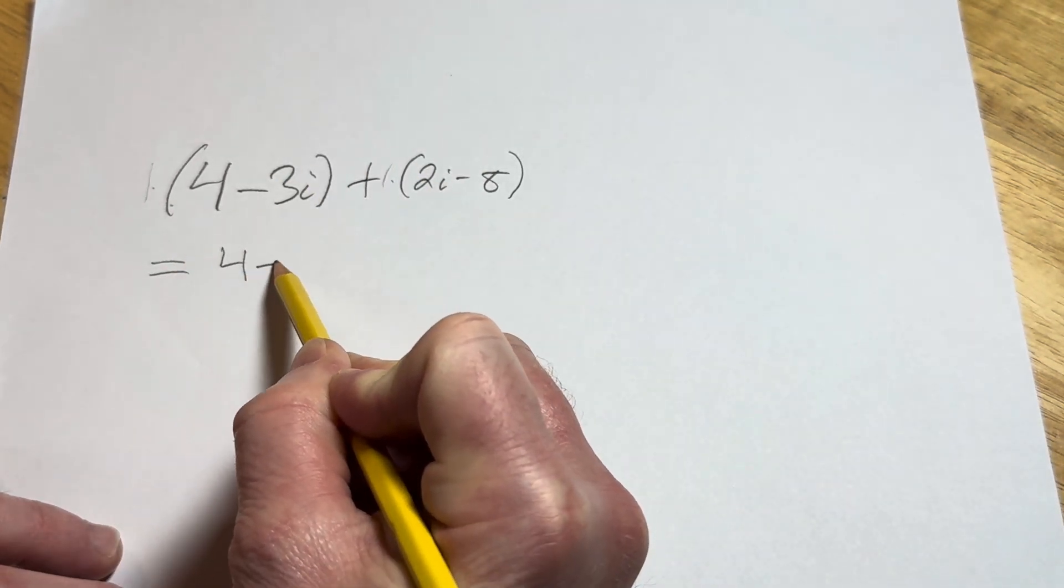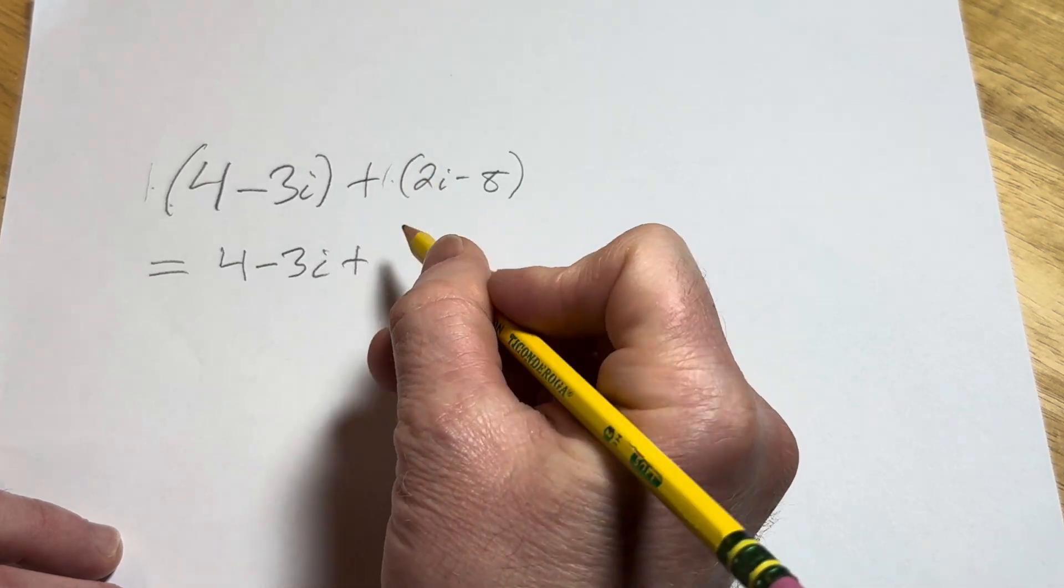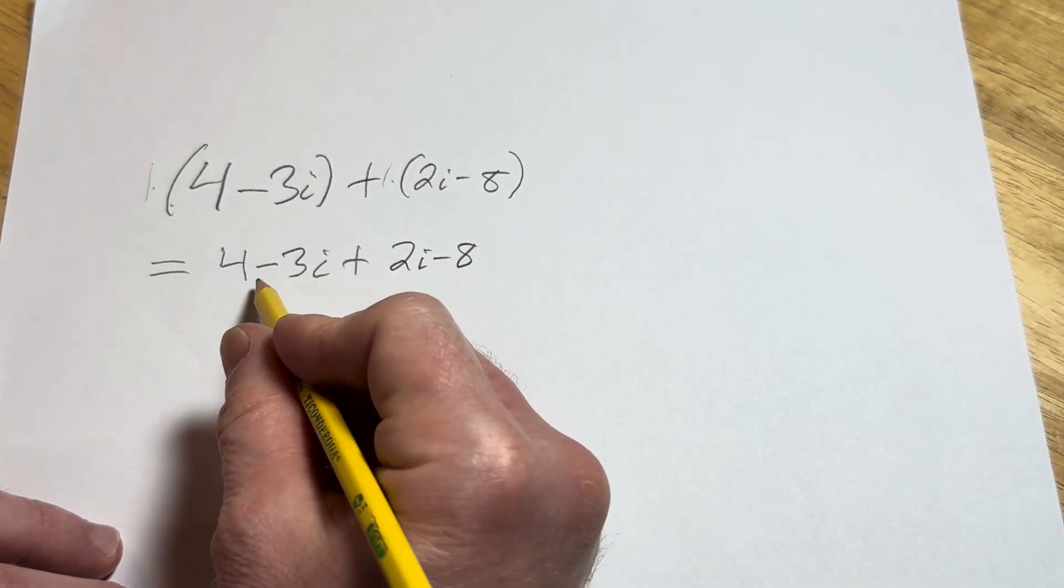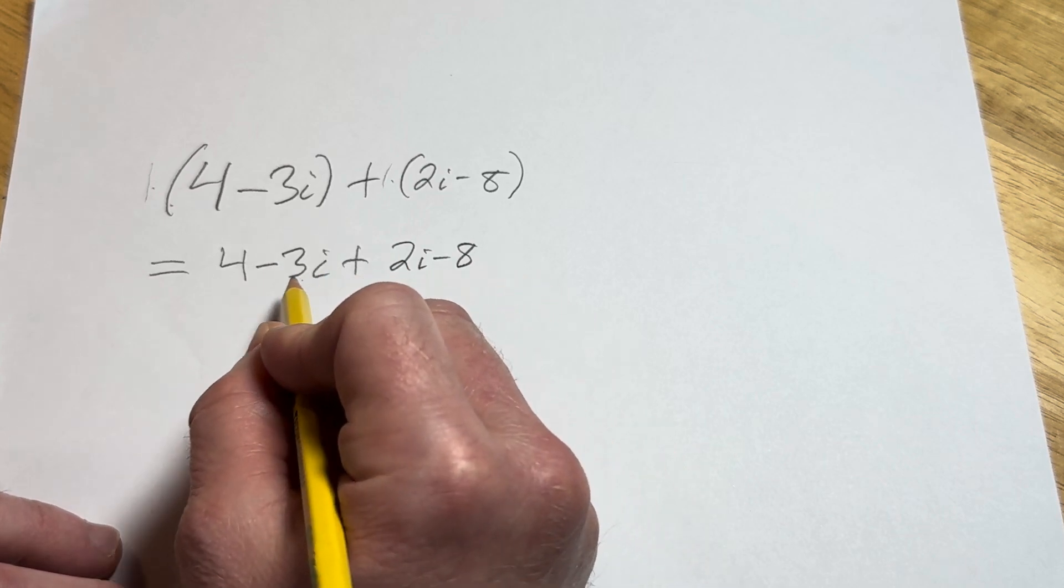So this is 4 minus 3i plus 2i minus 8. And so now what you can do is you can add the real numbers and you can add the pure imaginary numbers.